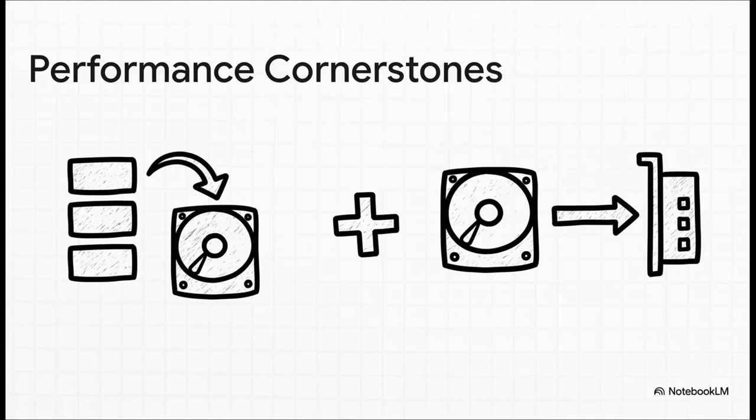First, it uses sequential IO with that append-only log to turn the supposedly slow disk into a massive, high-speed fire hose for data. And second, it uses the zero-copy principle to build an ultra-efficient pipeline from that disk straight to the network, cutting out all the waste along the way.